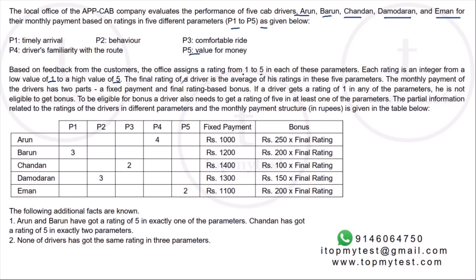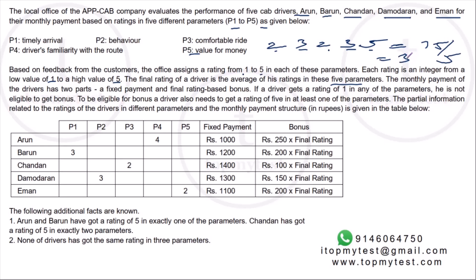The final rating of a driver is the average of his ratings in these five parameters. For instance, if a driver gets two, three, two, three, five — his total is fifteen, and fifteen divided by five is three. The overall rating may or may not be an integer, but for each of the parameters the ratings must be integers.